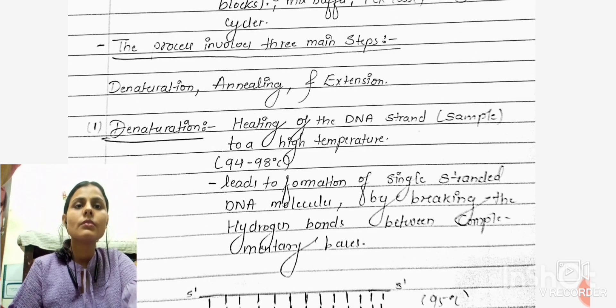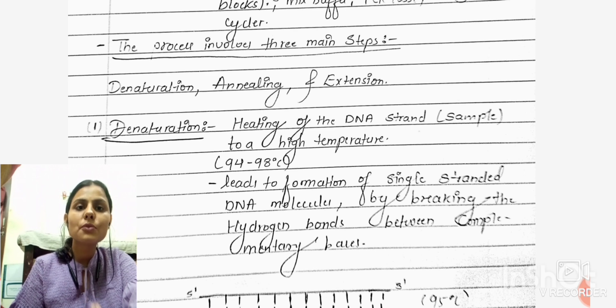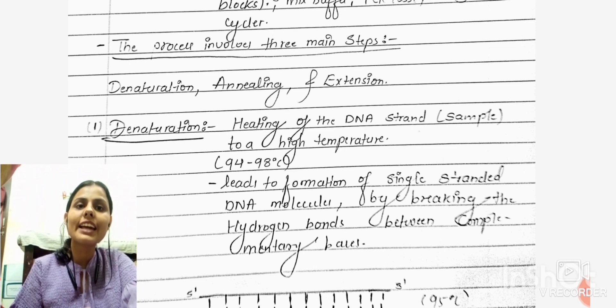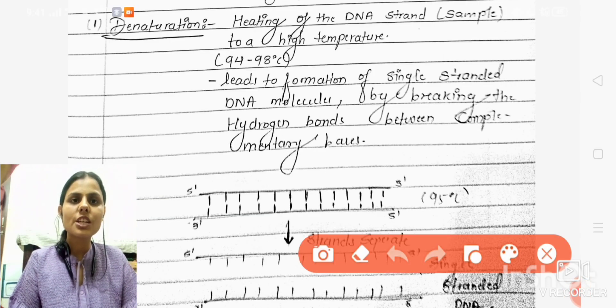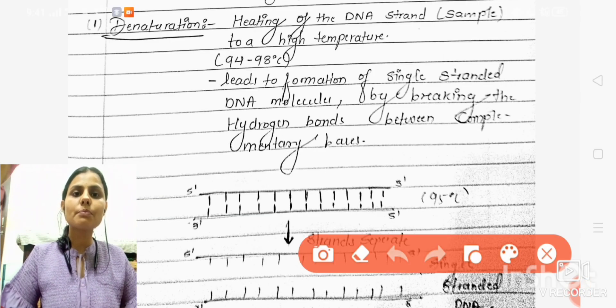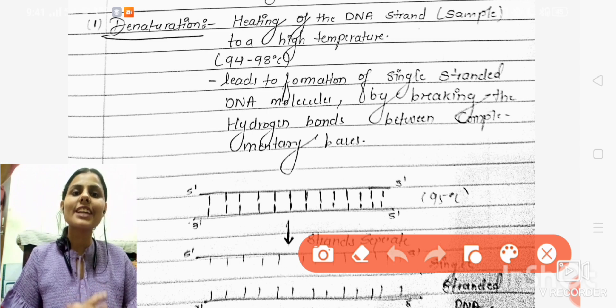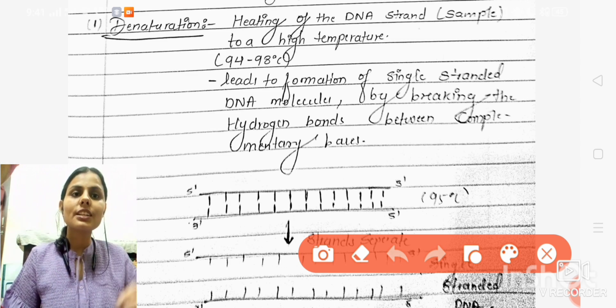There are three main steps involved in this PCR reaction: denaturation, annealing, and extension. Let's understand them one by one. Starting with the denaturation step, heating of the DNA strand takes place. We heat the DNA strands at a temperature of 94 to 98 degrees Celsius, approximately at 95 degrees Celsius.